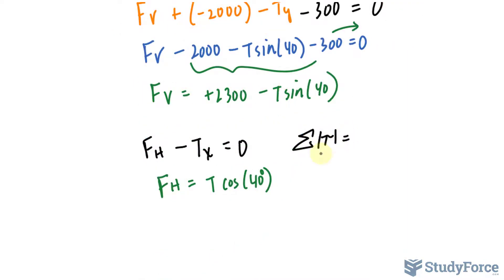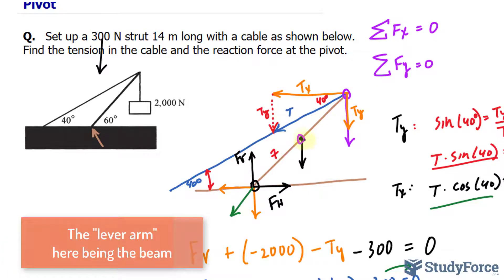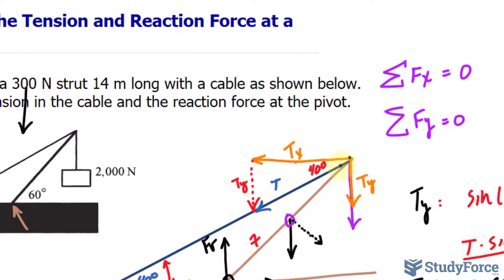At equilibrium, the sum of all torques acting in the system must equal zero. There are two points of interest for calculating torque: midway through the length of the lever arm (the strut), and at the very end. The distance from midway to the pivot is 7 meters, multiplied by the force perpendicular to the lever arm. We have a torque going in one direction and one going in the opposite direction.